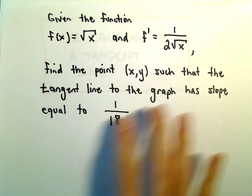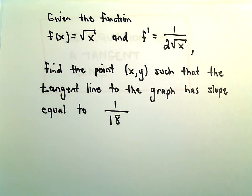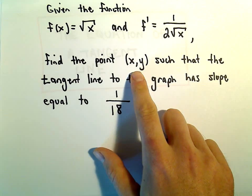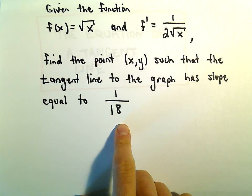What we want to do is find the point on the graph - and maybe there's more than one, in this case there actually won't be - but we're going to find the point (x,y) so that the tangent line to the graph has a slope equal to 1 over 18.